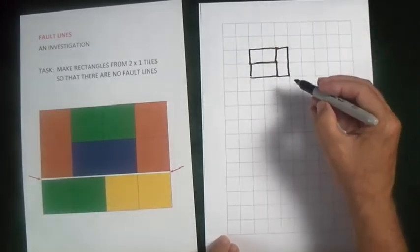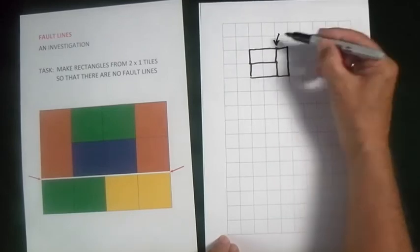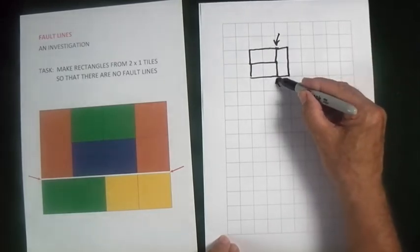And I've done that. I've made a rectangle, but look, it's got a fault line running all the way through it. Can you see that fault line?